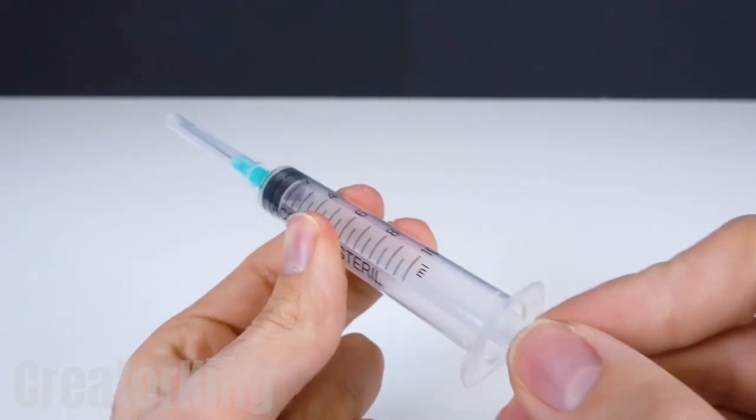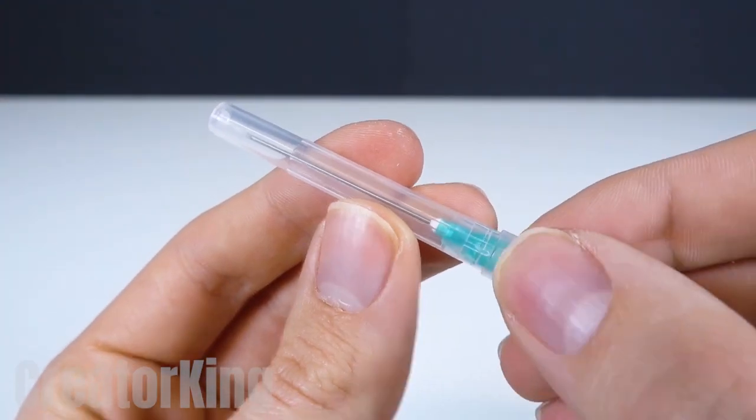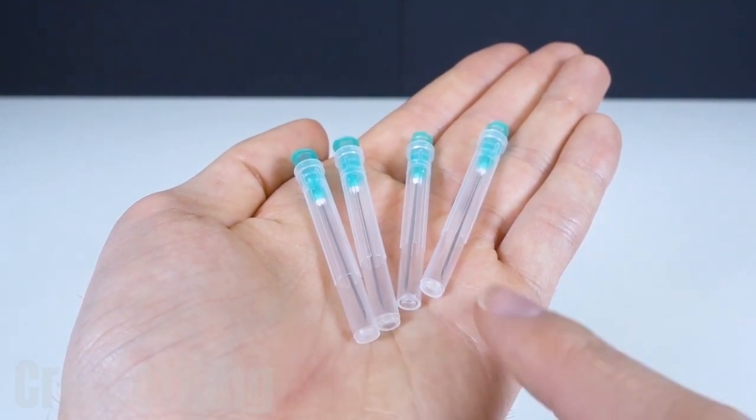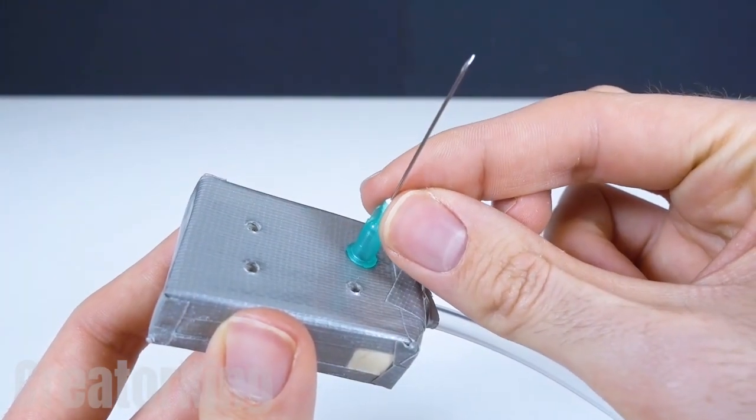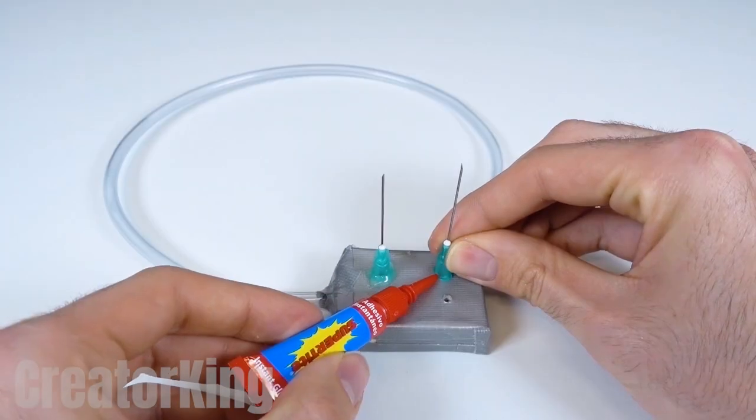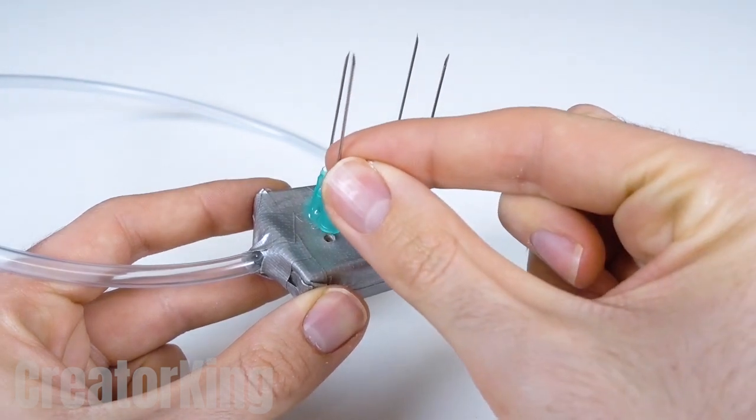Now we'll need the scariest part of a syringe. Remove the needles, which many of us are afraid of, from four syringes. Glue each of them into the four holes with lots of super glue.